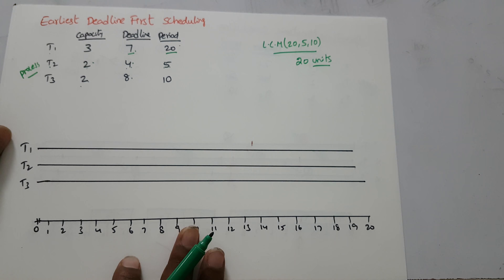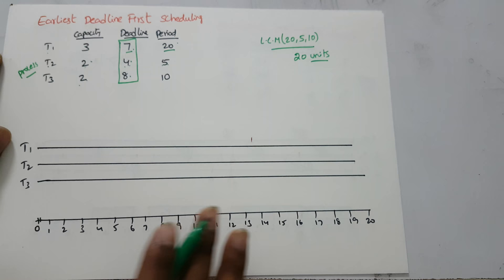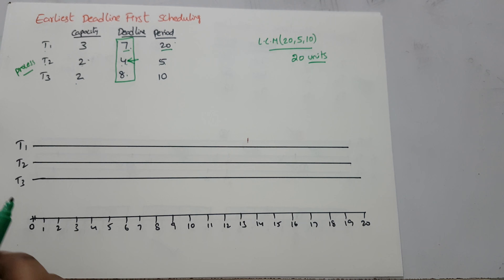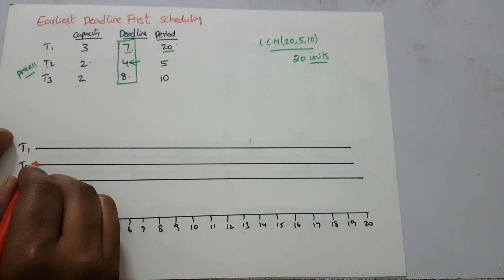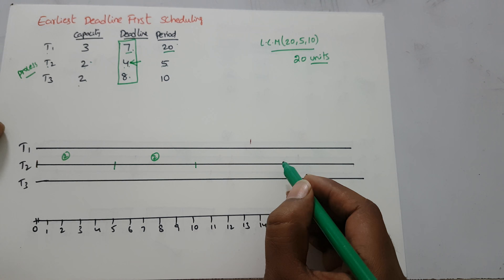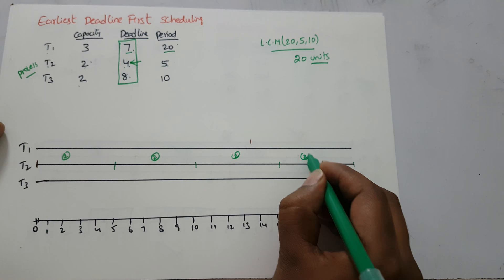We will start executing the algorithm. The main thing we should keep in mind is the deadlines — we should not miss them at any cost. t2 has the earliest deadline of four, so it will execute first. For every five intervals — zero to five, five to ten, ten to fifteen, fifteen to twenty — t2 has to execute two units each time.